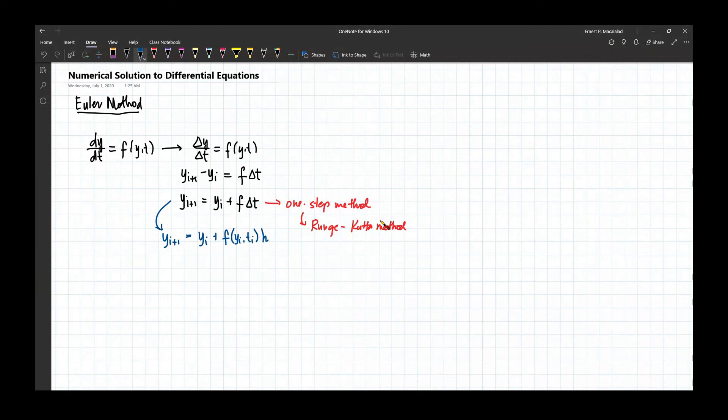For Runge-Kutta method, Euler method is actually first-order Runge-Kutta method. There are other methods wherein your f is higher order.